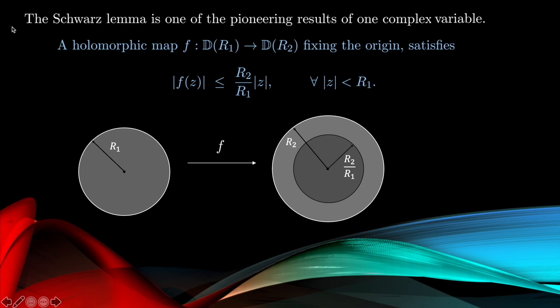It says that if we take a holomorphic map between disks — the first disk has radius r1, the second has radius r2, both centered at the origin — then any such holomorphic map which fixes the origin satisfies the inequality that the modulus of f is bounded by the ratio r2/r1 times the modulus of z. This is an inequality proven by Schwarz more than a century ago.